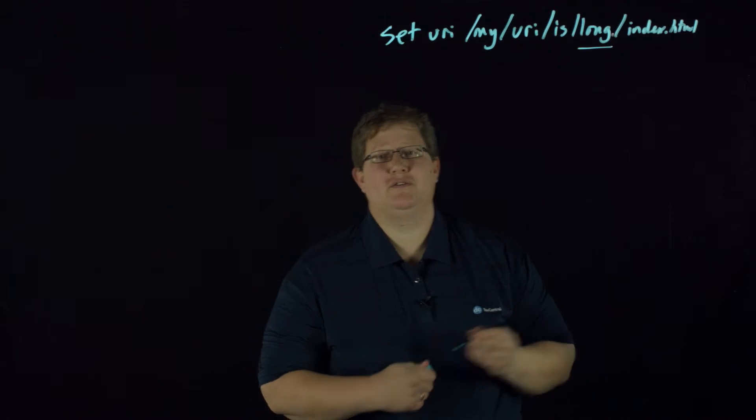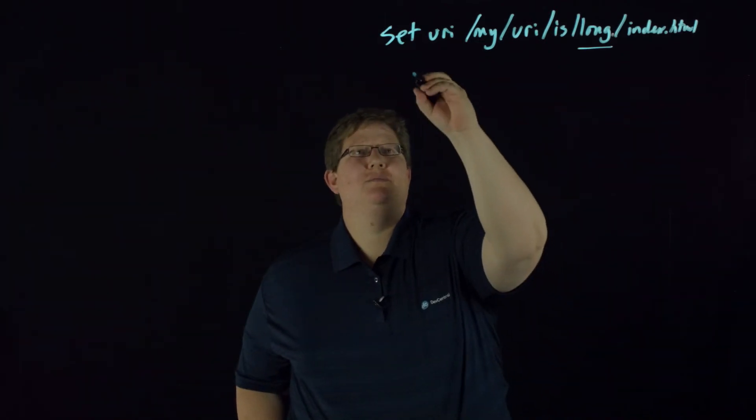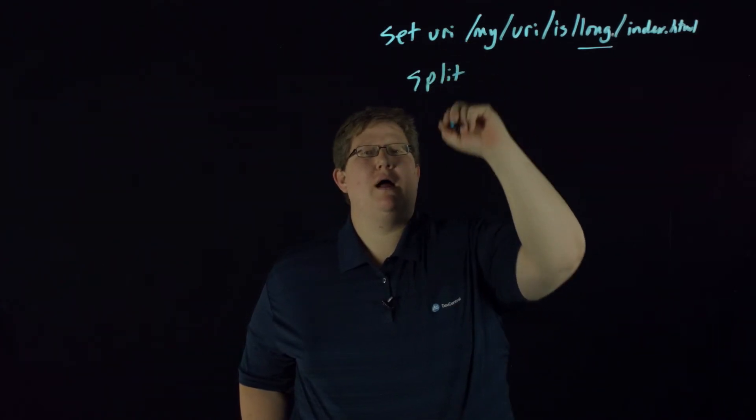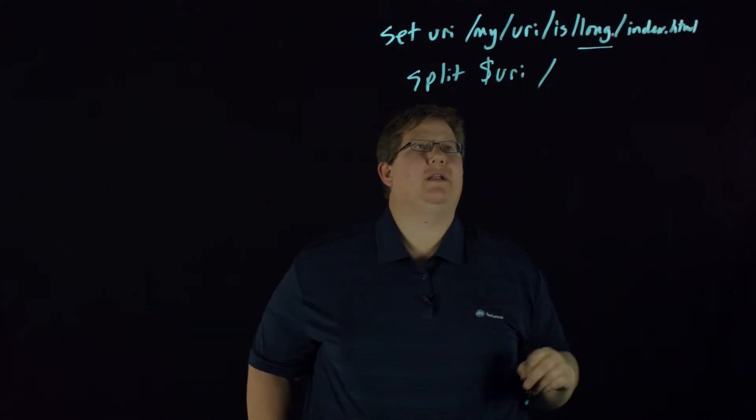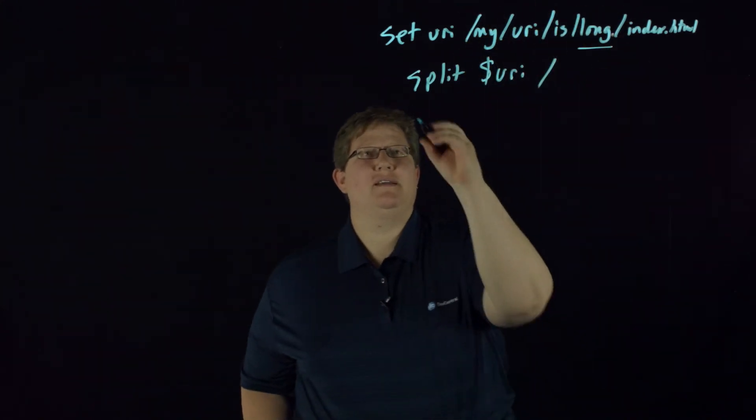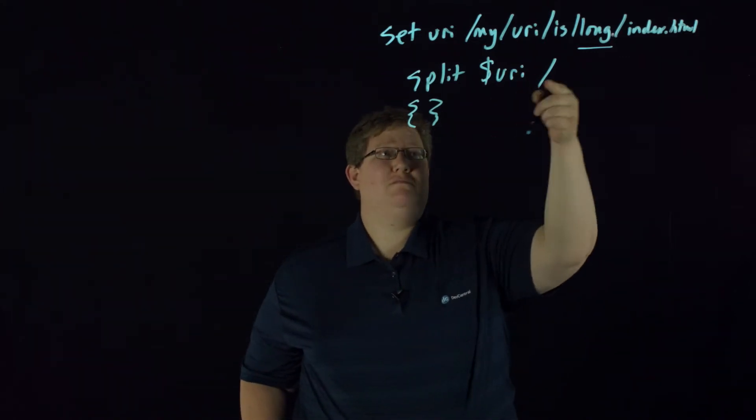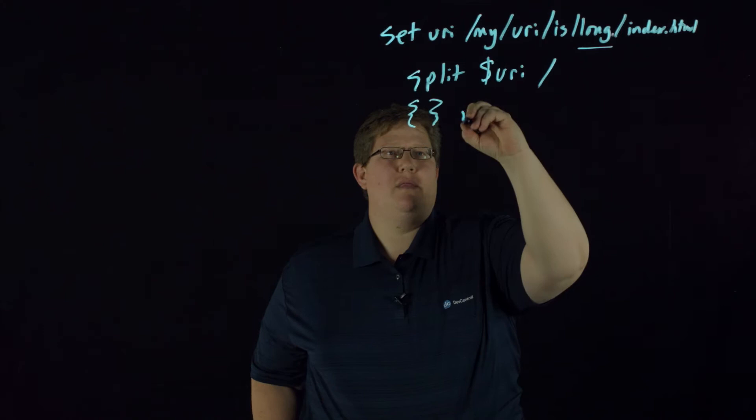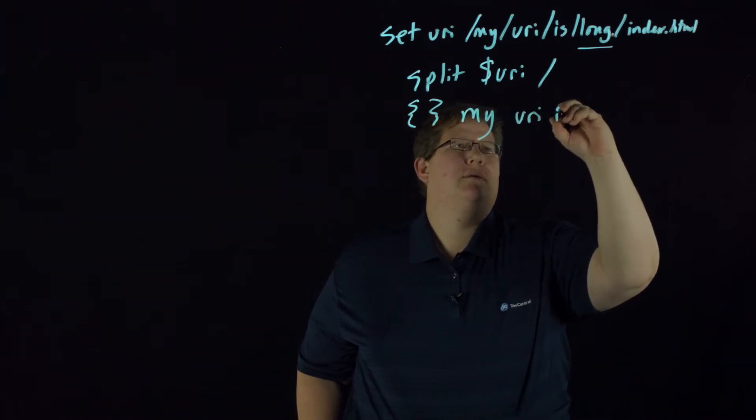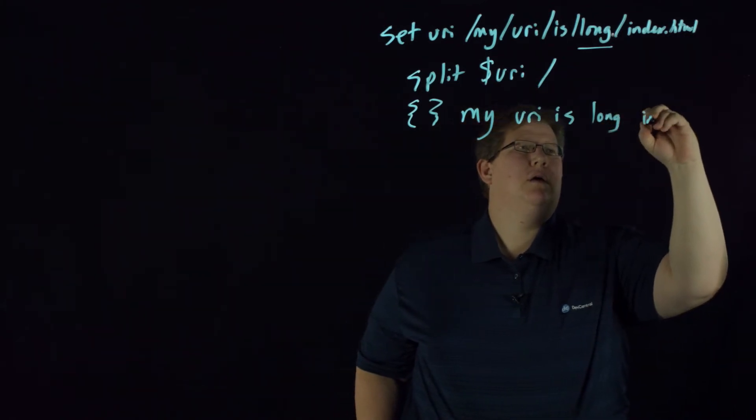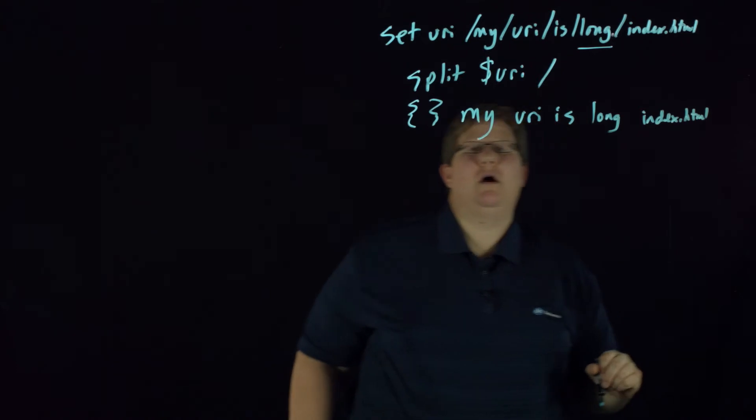The first thing we need to do is split this thing up. The best thing is to use the split command, so we've set the URI. You can do a split URI and split on the slash. What that does is it breaks it up into empty set, which is before the first slash right here, and then my/uri/is/long, and then index.html.